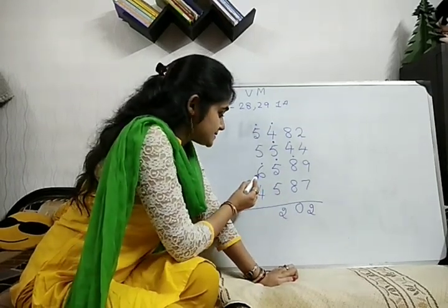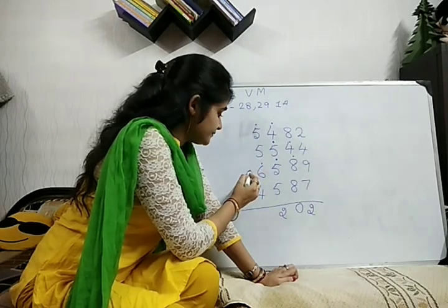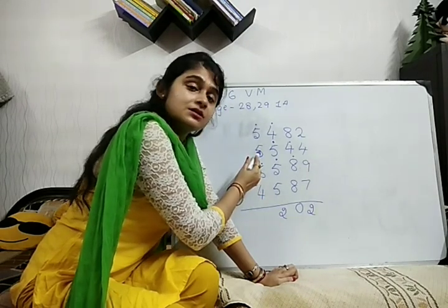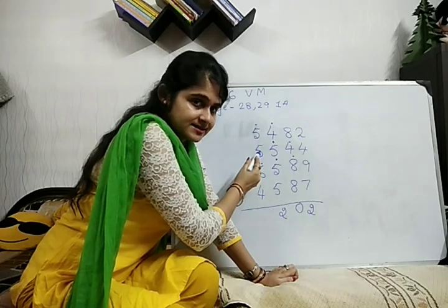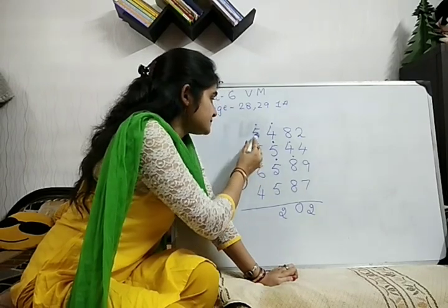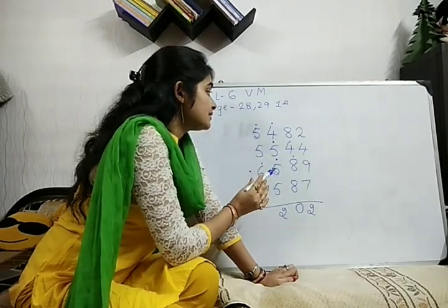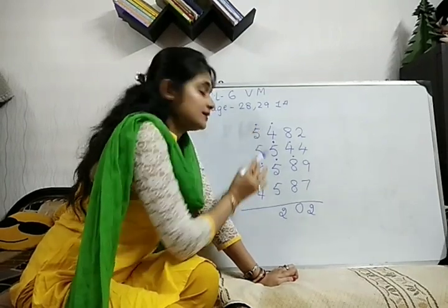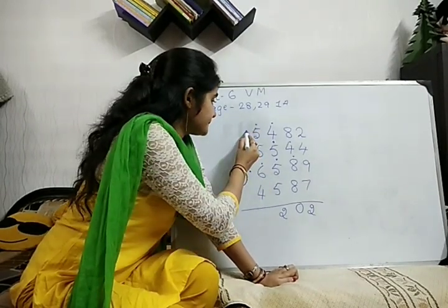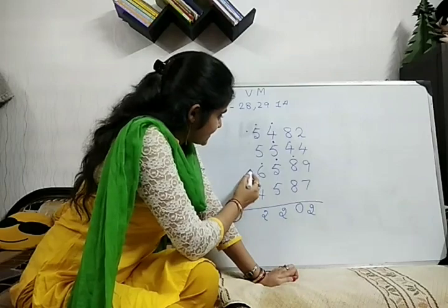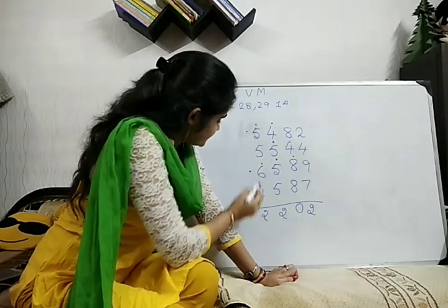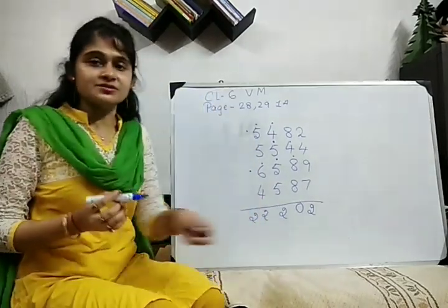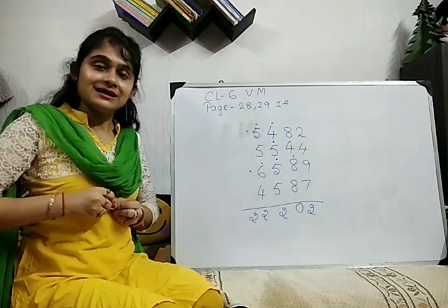Now 4 plus 6 is 10, plus 1 makes 11 — 1 will move. 5 means 6. 6 plus 5 means 11, plus 1 makes 12. How many drops? 1, 2. Your answer is 2, 2, 2, 2, 0, 2.